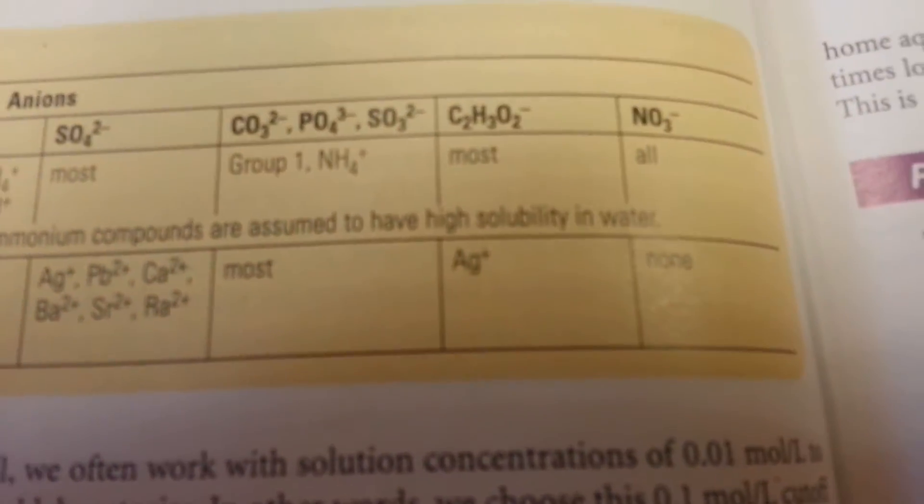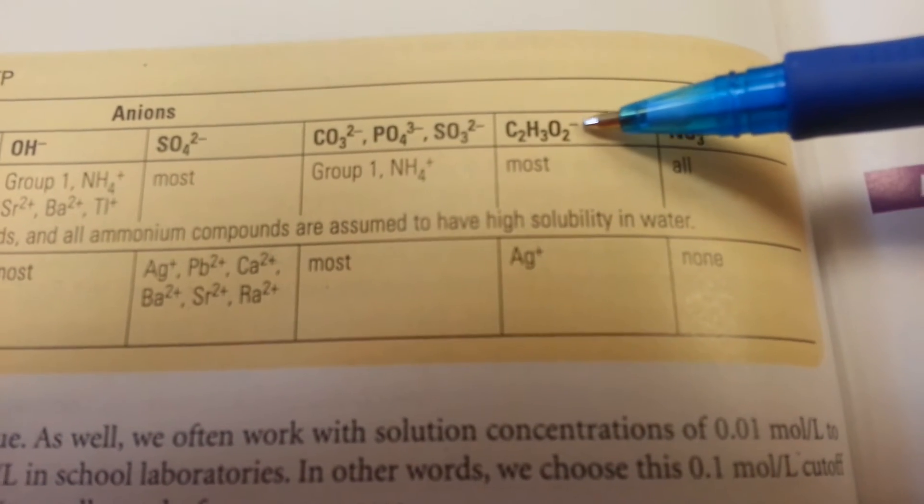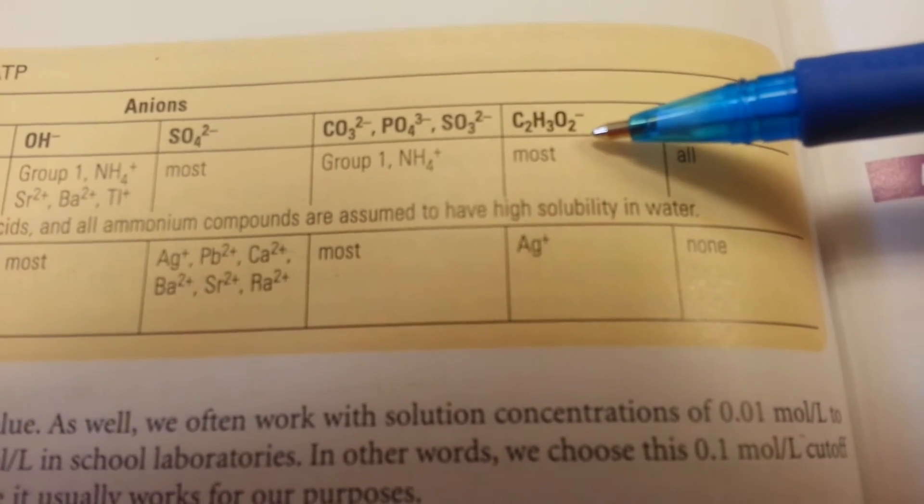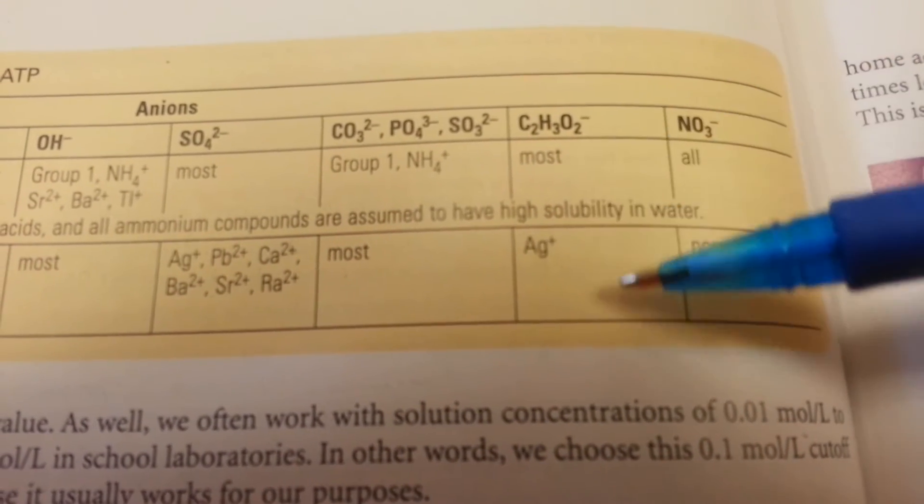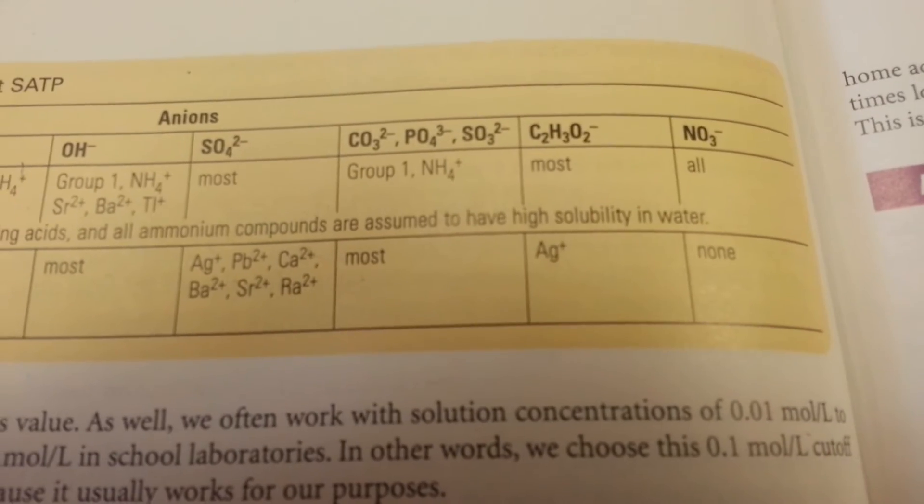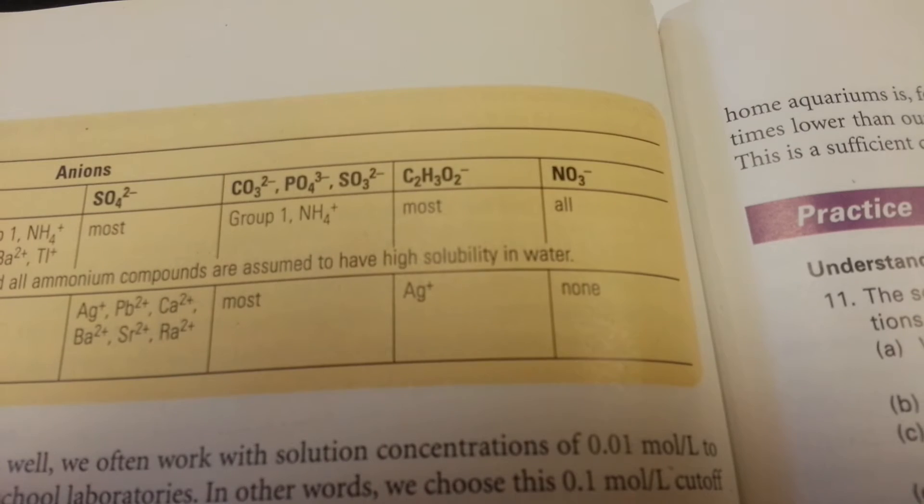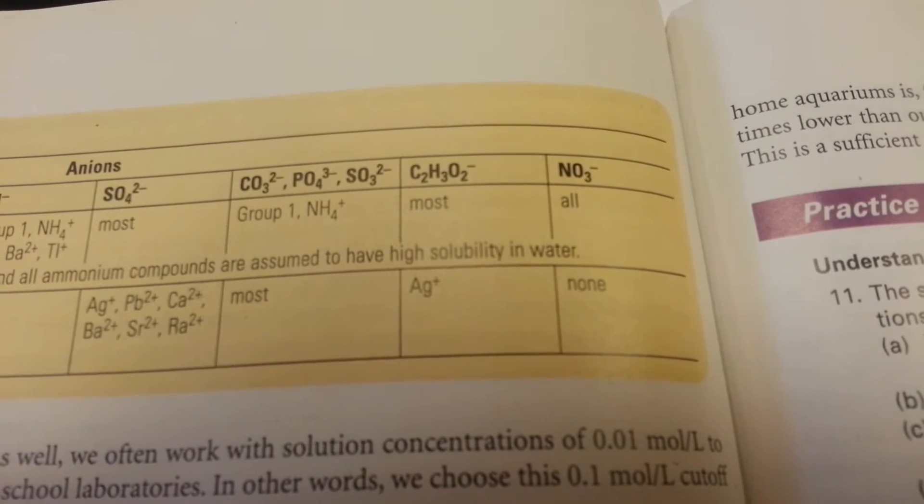Moving on, our acetate ion. Acetate ions usually have high solubility, but the silver obviously will have low solubility. And good old nitrates, they don't precipitate with anybody. All right, so I'll record that in our chart.